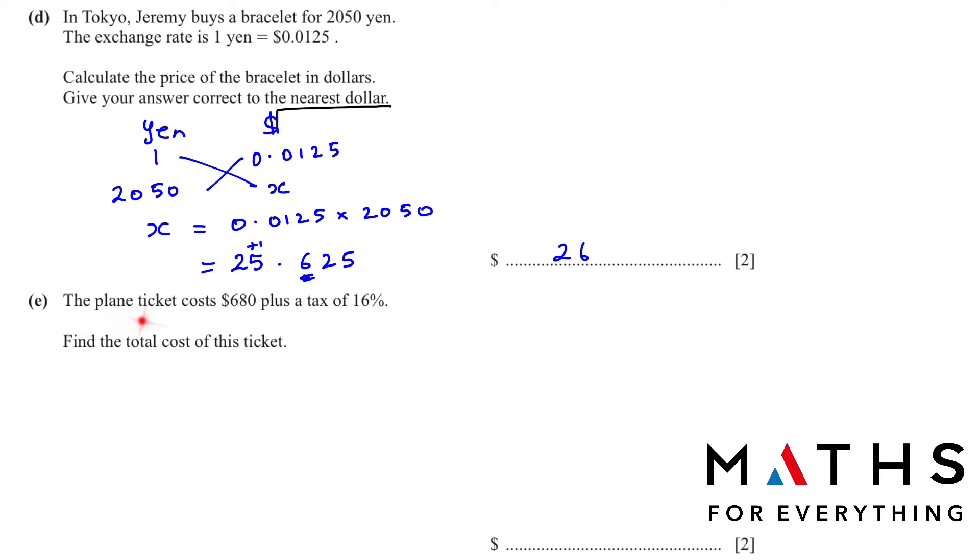Part E. The plane ticket costs 680 dollars plus a tax of 16 percentage. Find the total cost of this ticket. There is an easy way and then there is a simple way. I'll show you the simple way first. So find 16 percentage. 16 percentage means 16 divided by 100 of 680. You will get 108.8. Add that to 680, and that will give us 788.8 dollars. But it is dollars, so there will be two decimal points. So we need to put a zero here. This is the simple way.